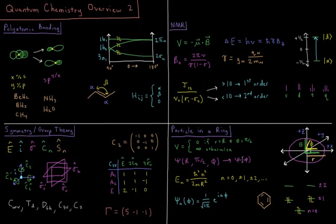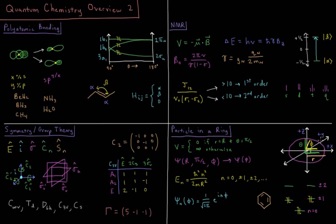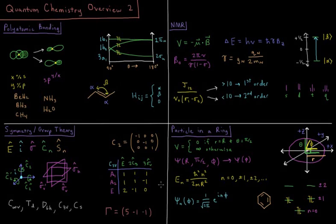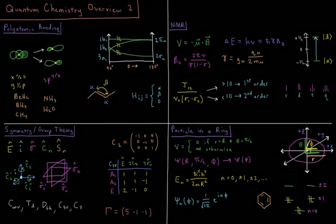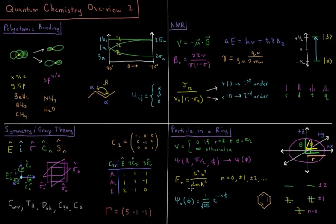Our wave function then can be reduced to a wave function of phi, the spherical-polar angle in the XY plane. Our energies are similar to the particle-in-a-box energies, except for now we have h-bar squared and a 2 instead of h and 8. And our quantum numbers can also be negative as well, so n equals 0, plus or minus 1, plus or minus 2, etc.